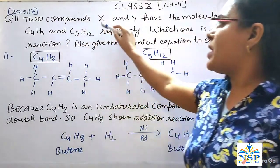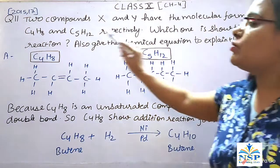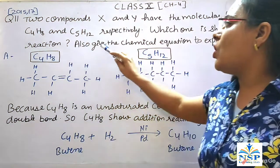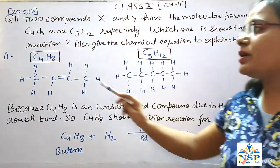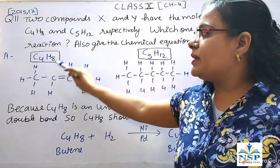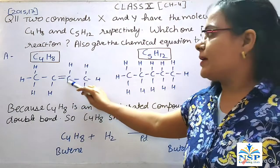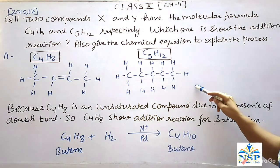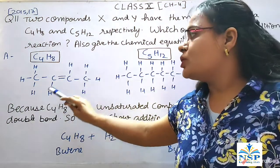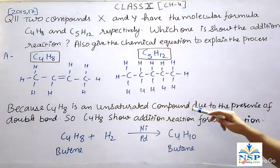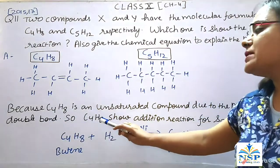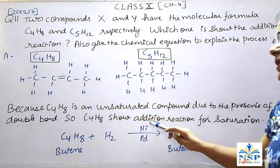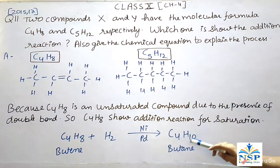Our next question: Two compounds X and Y have molecular formulas C4H8 and C5H12 respectively. Which one shows the addition reaction? Also give the chemical equation to explain the process. C4H8 is butene, which has a double bond between two carbon atoms, and C5H12 is pentane, which has only single bonds — it is a saturated carbon compound, while C4H8 is an unsaturated carbon compound. So, C4H8 shows addition reaction due to the presence of the double bond. When butene reacts with hydrogen in the presence of nickel or Pd, it forms C4H10, which is butane.